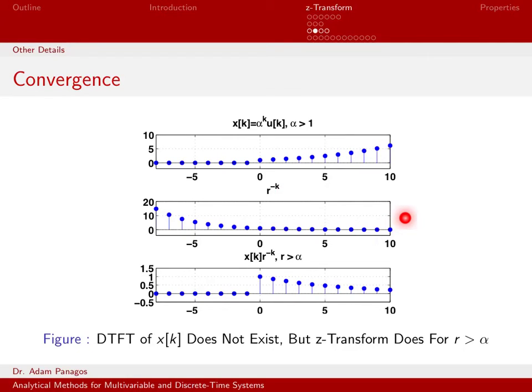So here I'm plotting a quantity r to the negative k. And I've chosen r as a value that is greater than alpha. So just to make things concrete, maybe up here I chose alpha as 1.2, and that's why I'm blowing up. Here I would choose r equals 1.4.